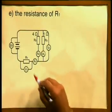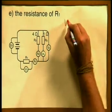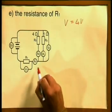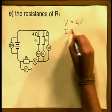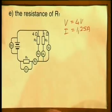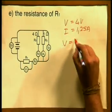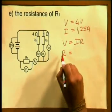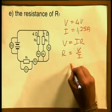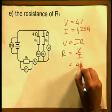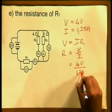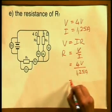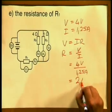And finally, we can calculate the resistance of R1. The potential difference across R1 is equal to 4 volts and the current passing through R1 is equal to 1.25 amperes. Writing down V equals I times R and rearranging to make R the subject — R equals V divided by I — substituting in 4 volts divided by 1.25 amperes gives us a reading for R1 of 2.4 ohms.